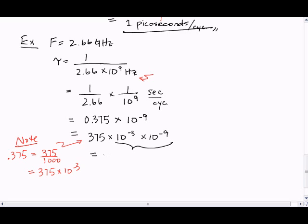Now, using the law of exponents, we get 10 to the minus 12. 10 to the minus 12 is pico, so our answer can be rewritten as 375 picoseconds per cycle.